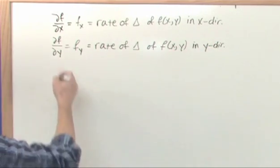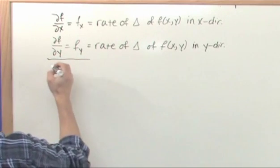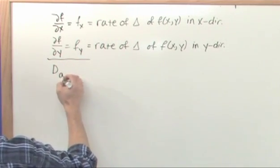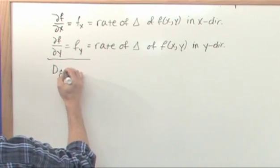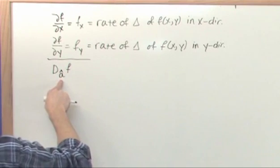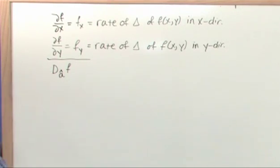And then that was several sections ago, and then we defined the directional derivative, which was along some vector a. The directional derivative of f in the direction of a, which is an arbitrary direction. The reason I've got a caret on top of the a is because remember we always had to use a unit vector to describe the direction that we cared about.